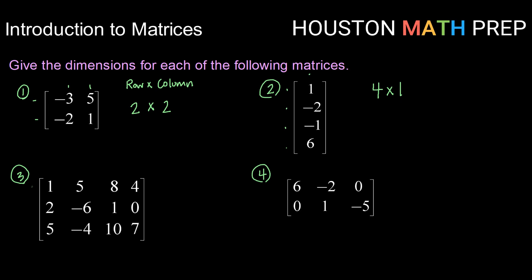Okay, example three, we have one, two, three rows. That's going to be a three by one, two, three, four columns. Example three is a three by four matrix.